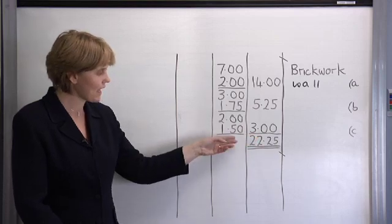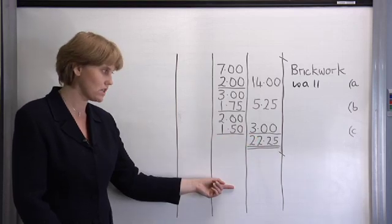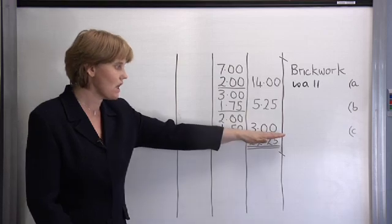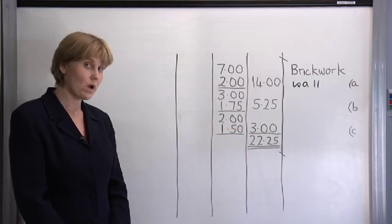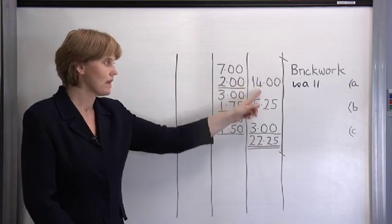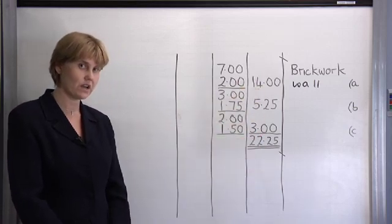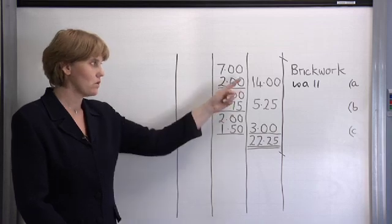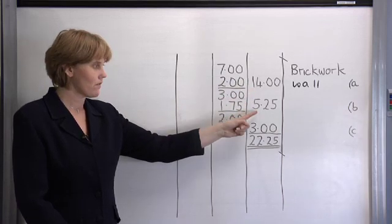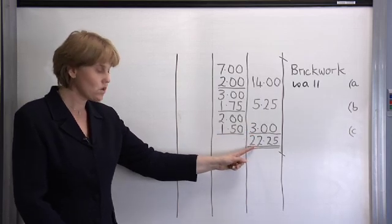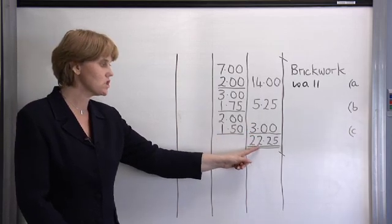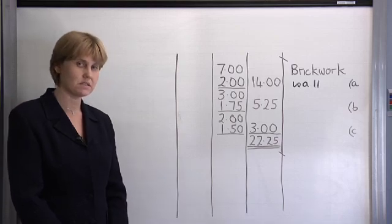This underlining is here because we have no more dimension entries. So we underline and then to work out the total area of brickwork we add up everything above the line. So 14 metres plus 5.25 metres plus 3 metres gives us a total garden wall area of 22.25 metres squared.